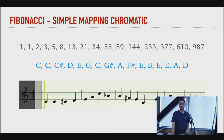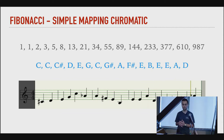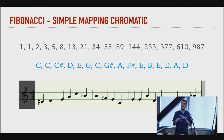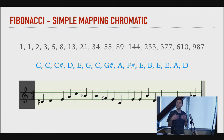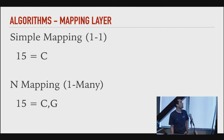We do the same process: assign a number to each note. The implementation looks really similar, except in this case we have more notes in the array and we get the modulus 12. So Fibonacci with this new algorithm — Simple Mapping Chromatic — sounds like this. [Audio plays] It sounds a little more jazzy. But again, this is just raw output, ready to be interpreted, arranged, and used as inspiration.